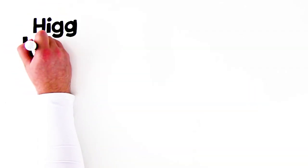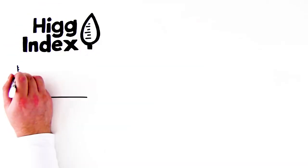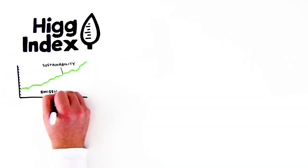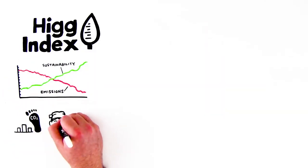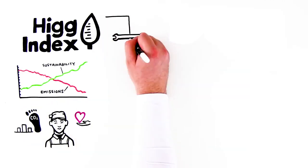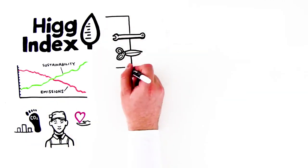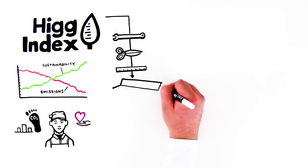This is what the HIG Index does. It gives companies a standardized way to measure sustainability, like tracking their carbon footprint and making sure their factory partners are treating workers fairly. The HIG Index is a suite of tools for the standardized measurement of value chain sustainability.